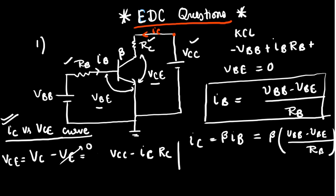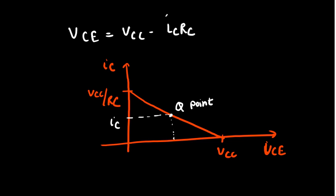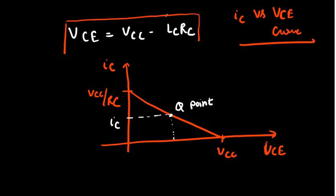So this would give you the load line equation. As you can see, we wanted to draw IC versus VCE curve. So this would be our load line equation and we can plot it simply. How can you plot it? You can use the formula Y equals MX plus C where X is VCE and Y is IC.